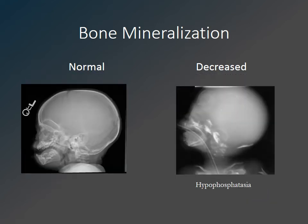Here is a skull x-ray in a patient with diminished bone mineralization related to hypophosphatasia. Compared to the normal skull on the left, the bone mineralization in this patient is so diminished that it is essentially absent by radiography, as seen in the skull and in part of the cervical spine.